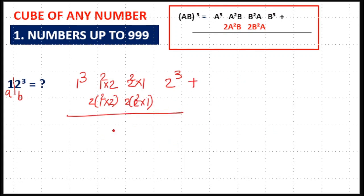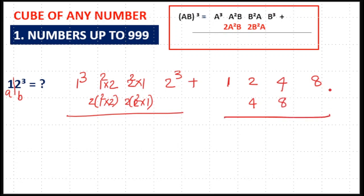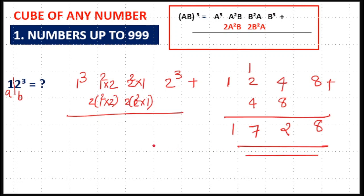For reference: 1 cube is 1, 2 cube is 8. Write them on the left-hand and right-hand sides. In the middle, 1² × 2 = 2 and 2² × 1 = 4. Doubling the middle terms: 2 × 2 = 4, and 4 × 2 = 8. Adding together: 8; then 8 + 4 = 12, write the 2 and carry over 1; then 1 + 2 + 4 = 7; and 1. So the answer is 1728.